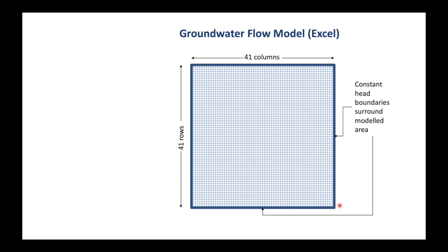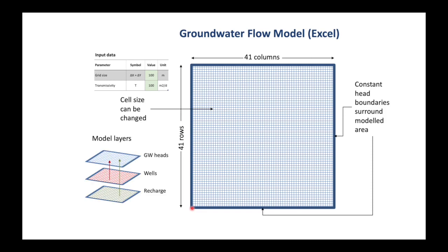The constant head boundary represents that large body of water that we talked about earlier. So basically in these cells the hydraulic head of the water will always be constant. We can also change the cell size by adding the value of the x and y distance, and also the transmissivity. Our model has three main layers: groundwater heads, wells where we can put in pumping wells, and recharge for groundwater recharge.